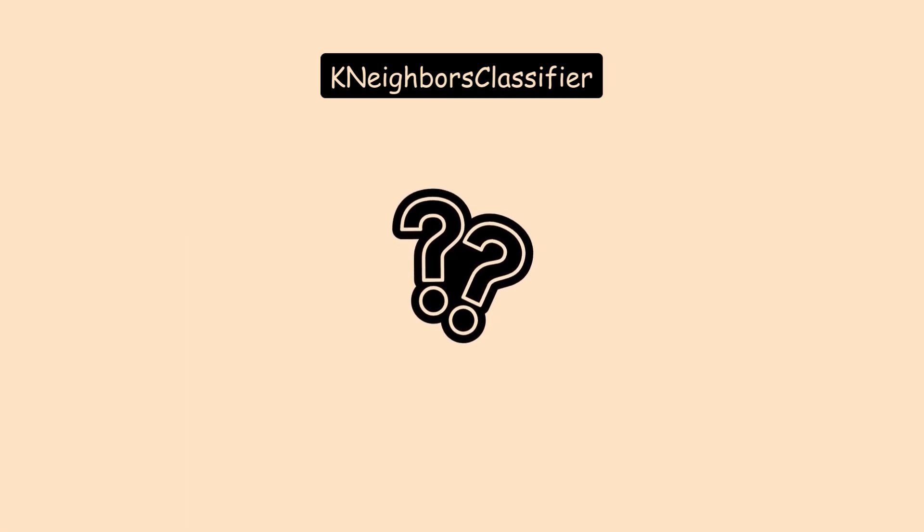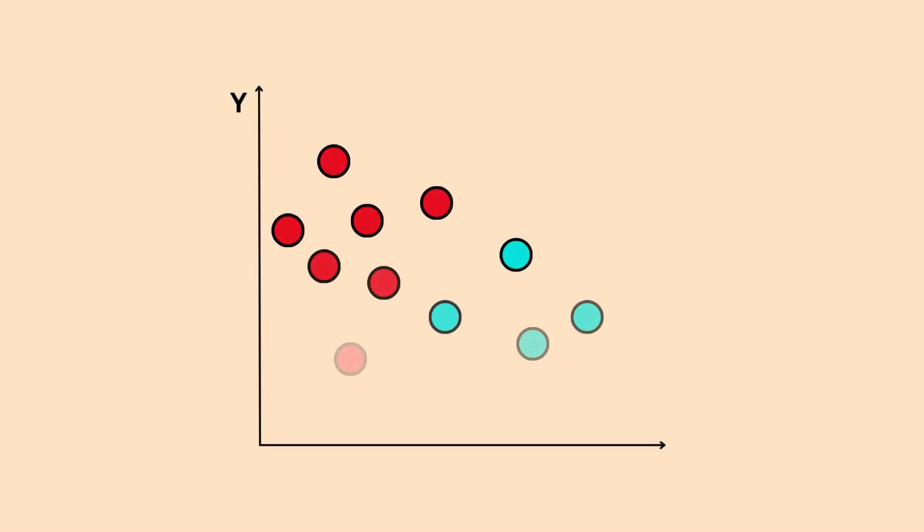So how does this work in practice? Let's visualize it. Here's some data represented by red and blue dots. Suddenly, a black dot appears. It's a new, unseen data point. Our task is to classify this point. Does it belong to the red class or the blue class?